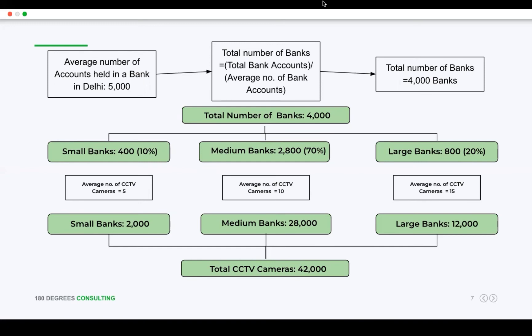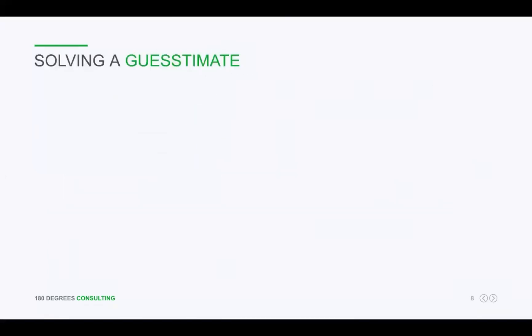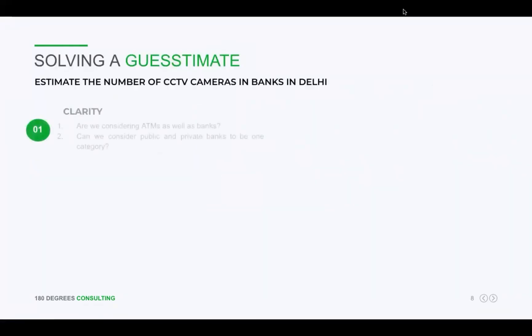After multiplying 5 by 400, I have 2,000 CCTV cameras for small banks. Similarly, for medium banks I have 28,000, and for large banks I have 12,000 CCTV cameras. So the total number of CCTV cameras comes out to be 42,000. That's a good assumption. So here, Ananya solved the simple guesstimate of estimating the number of CCTV cameras in banks in Delhi.